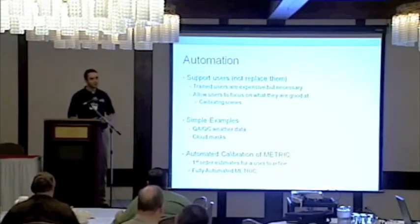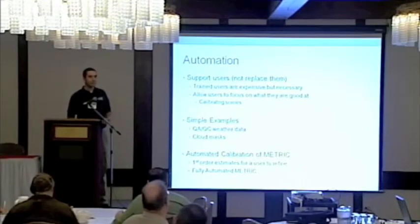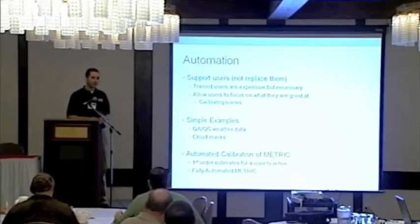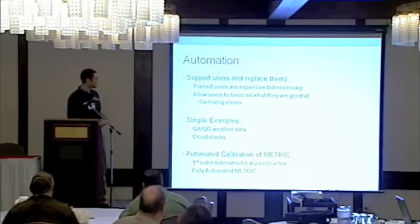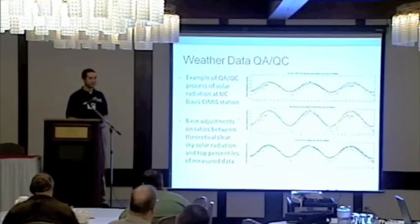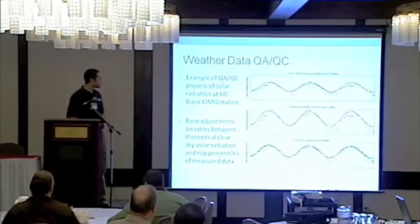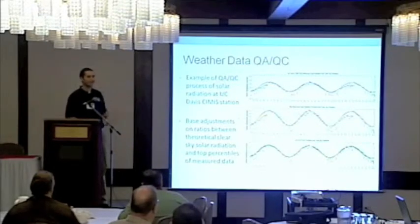I'm going to give two examples of automation and users. First, weather data QAQC. Dr. Allen's team has a great automated QAQC program, and you have to do this — you have to QAQC your weather data. This is the solar data showing release cycles. The black is the clear sky, and you can see the sensor just isn't getting up there. Something was happening, then they went and cleaned or wiped it off, and now it's back to the clear sky. You have to look at this data and adjust it, or at least consider what's happening.